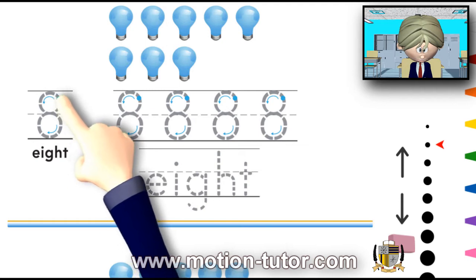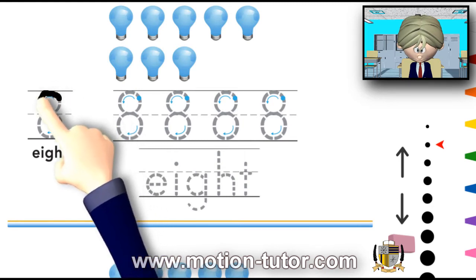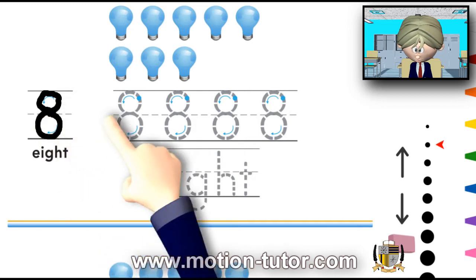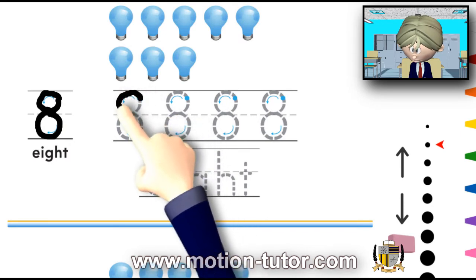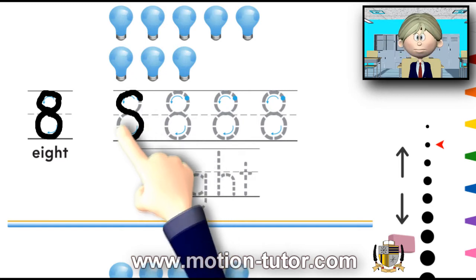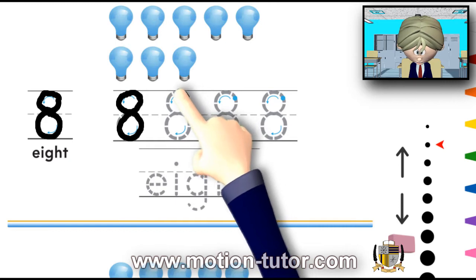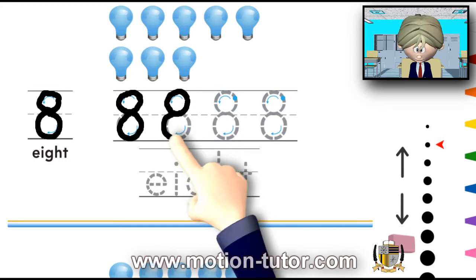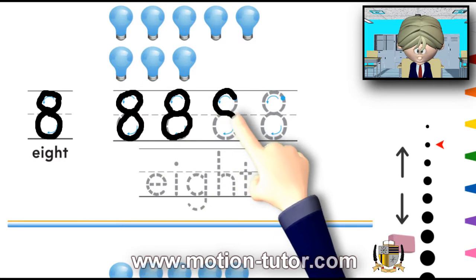This is how we write the number 8. We go around like that, and then we do it again. Or you can do it like this, and then go around down like here, and go like that. It all depends on what you feel comfortable with doing. You can do like this, just two circles on top of each other. Or, you can just go like that.